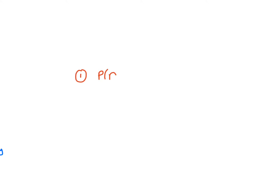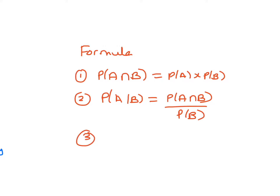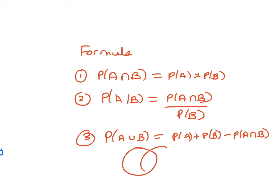There are a few formulas to be familiar with. The probability of A and B happening is the probability of A times the probability of B. The probability of A given B is the probability of A and B happening over the probability of B. And the probability of A union B would be the probability of A plus the probability of B minus the probability of them both happening together — minus the intersection.